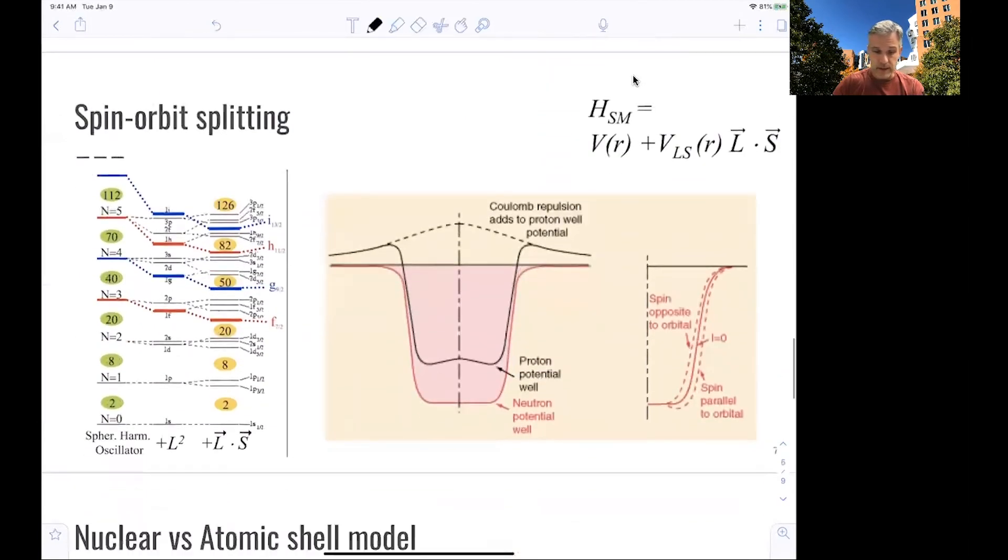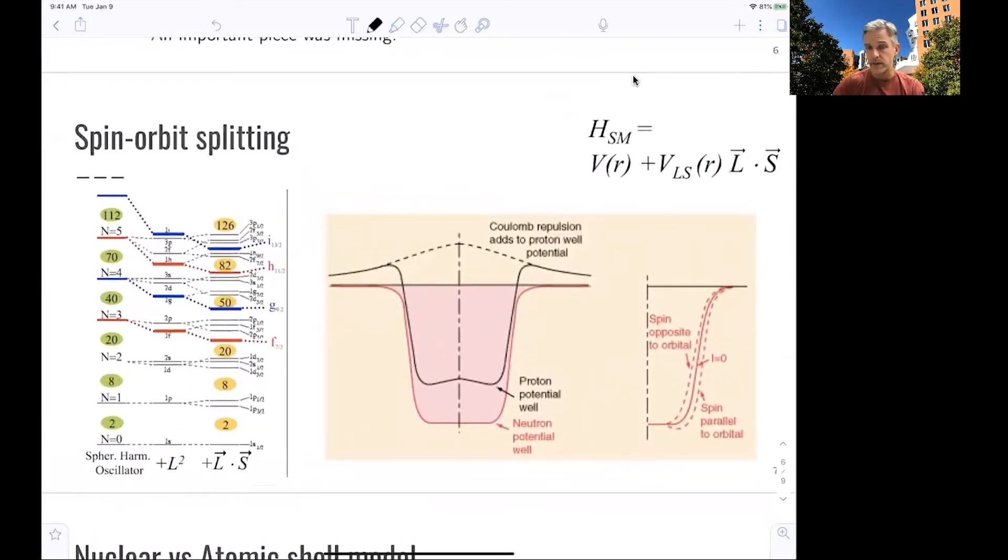What was missing was the spin-orbit part of the discussion. We alluded to this in the nuclear force. What you have to do is, beyond a three-dimensional harmonic oscillator, you have to add the spin-orbit coupling to your Hamiltonian. And when you do that, you change the orbit such that the magic numbers agree with the experimental data. You see here the potentials for proton, which has also the Coulomb repulsion added, and the nuclear potential. And then you see that the spin-orbit coupling slightly changes the potential.